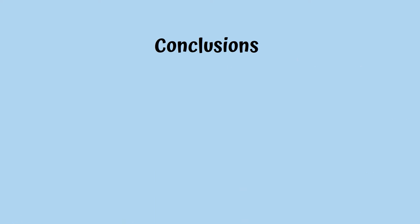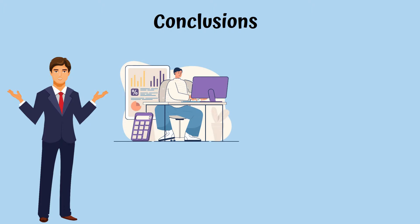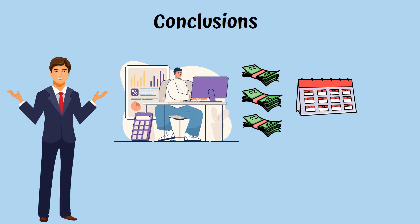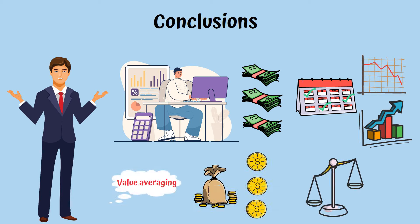Conclusions: DCA represents a practice in which an investor allocates an established amount of money at regular intervals for a period of less than one year, generally. The strategy tends to work best when it comes to volatile investments, such as crypto. Value averaging focuses on investing more when the price of crypto falls, and less when the price is increasing.